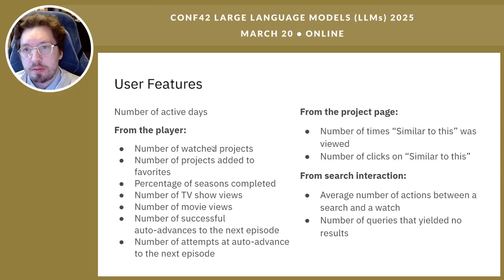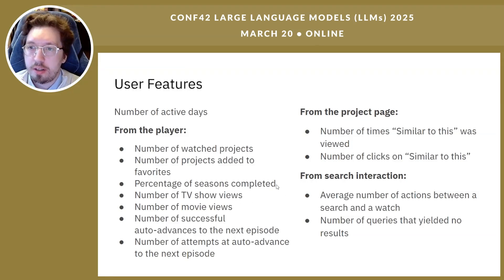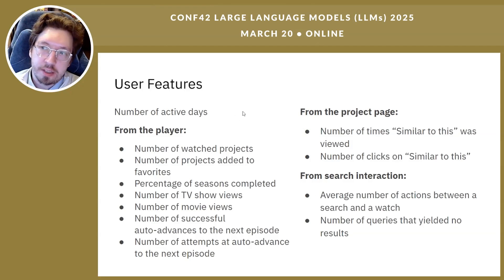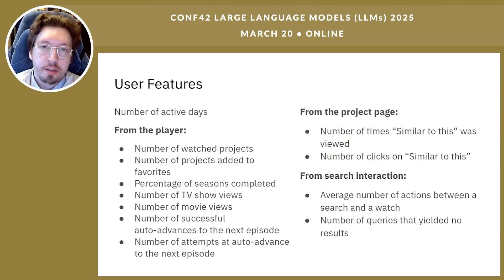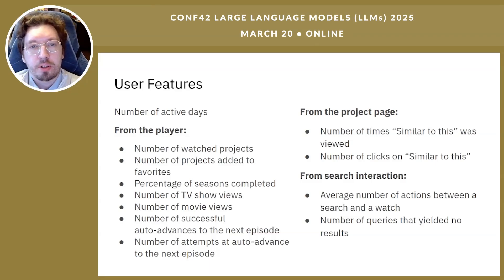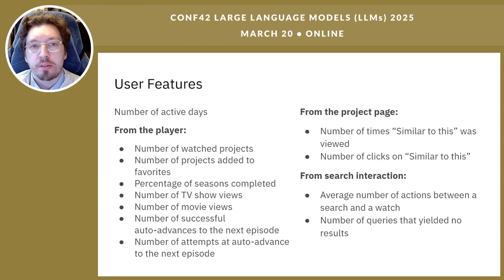For example, for the player, it's how often users watched projects — TV shows, movies, etc. For the search function, it's the number of queries that yielded no results and those that did yield results. Features from project pages are connected with similar interactions. Most user activity occurs in the player, so that's where most features come from. Of course, we log many more data points, but we selected features more indicative of eventual re-subscription. Our selection criterion was the Gini score of each feature relative to conversion.